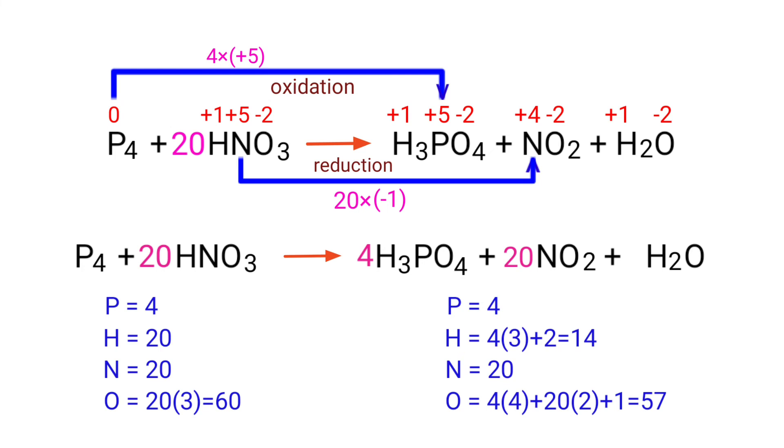Now we need to balance the hydrogen and oxygen atoms. To do this, we need to put a coefficient of 4 in front of H2O. The equation is now balanced. There are 4 phosphorus atoms, 20 hydrogen atoms, 20 nitrogen atoms and 60 oxygen atoms on both sides.